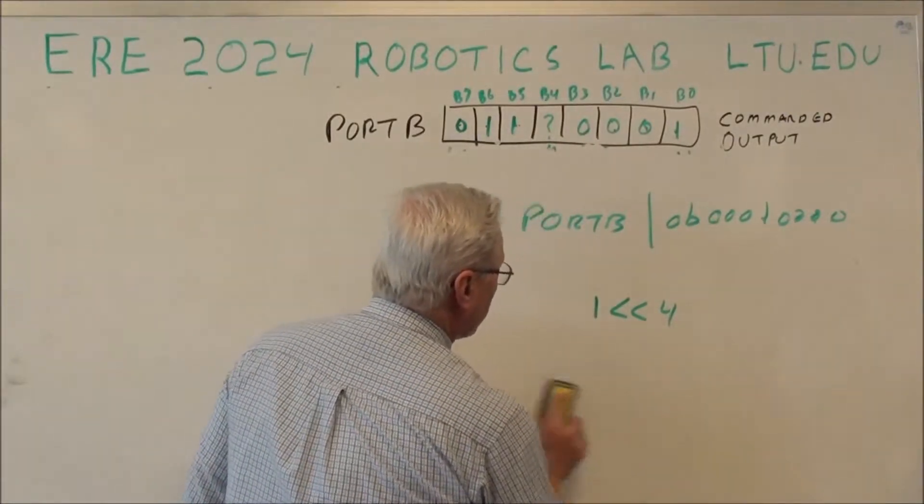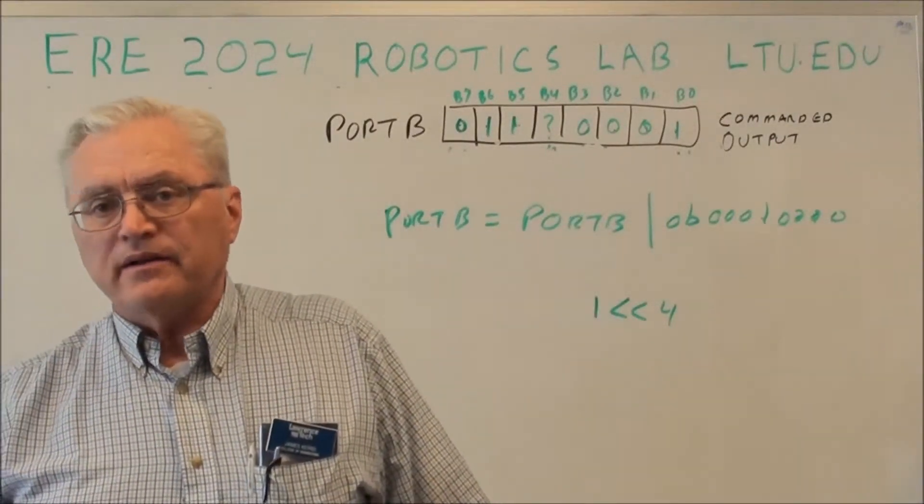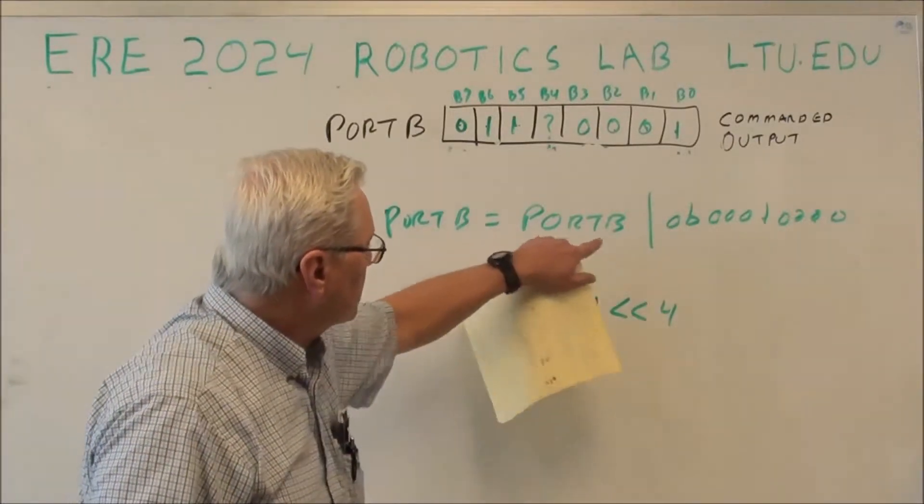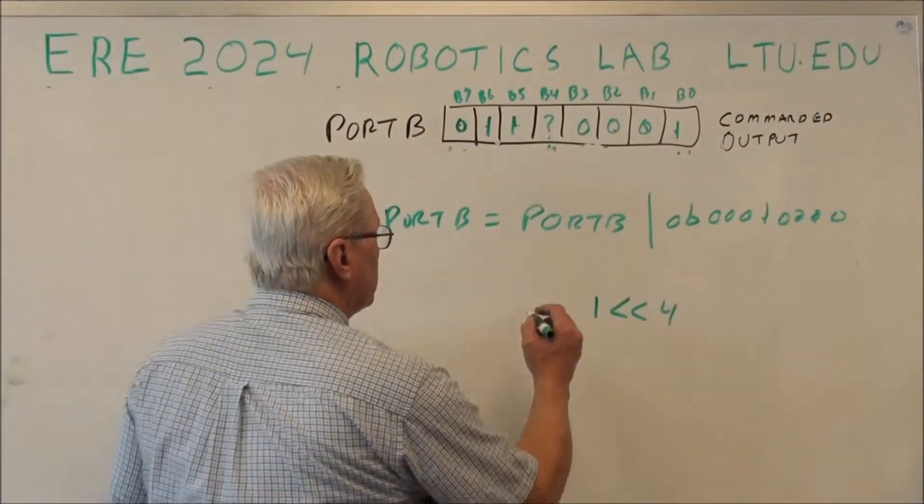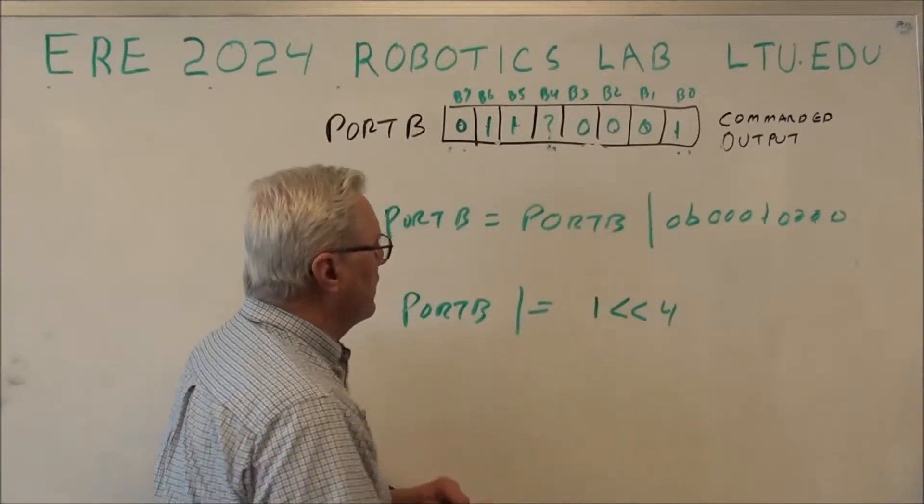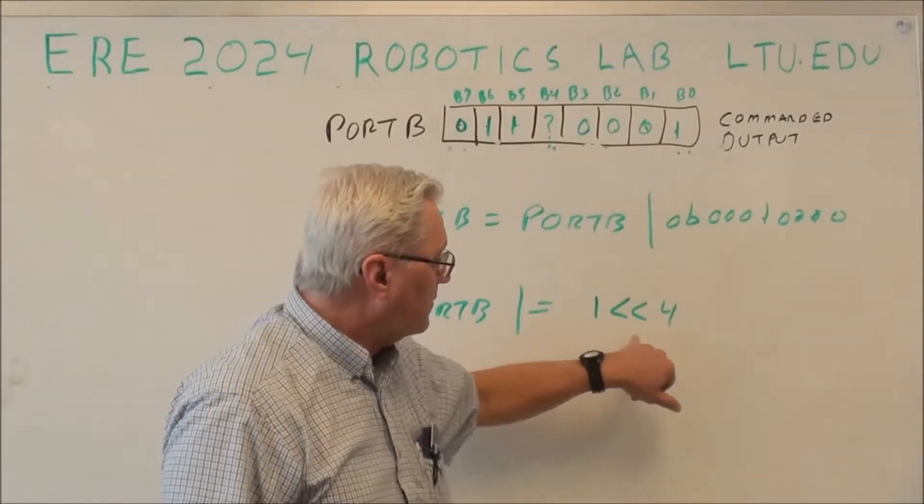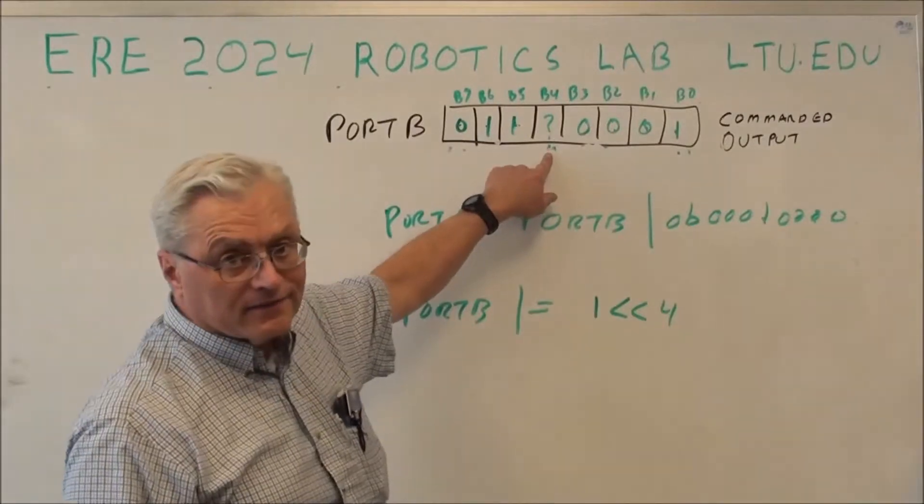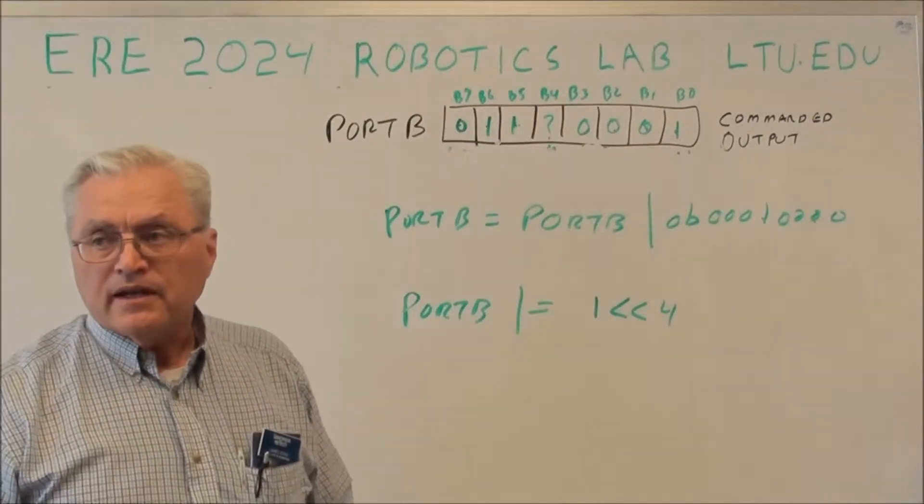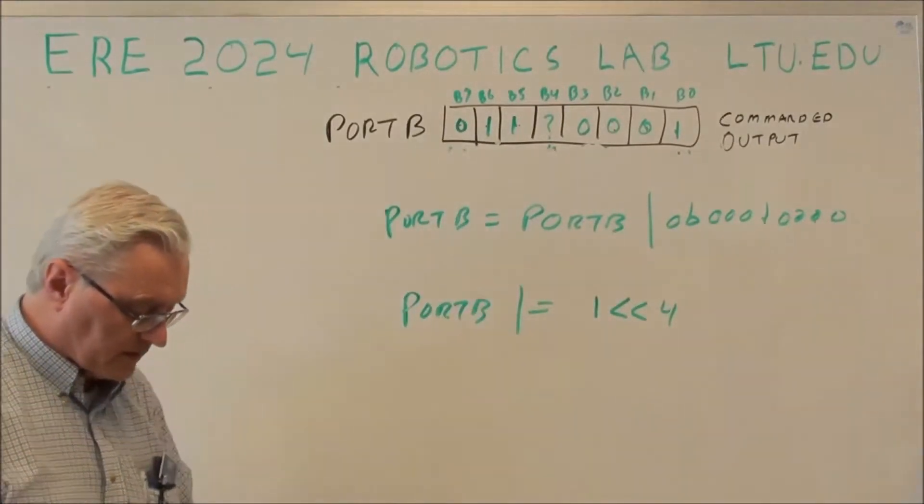Because this is C and because the people that wrote C, near as I can tell they don't like to type, they have other shortcuts. So instead of writing it out like this where it's equals port B OR, I can just say port B OR equals 1 shifted over 4. So now I'm going to take that 1, shift it over 4 places, do an OR with the existing contents of port B and store that in port B.